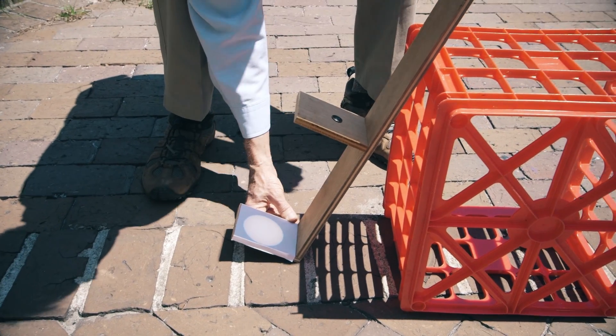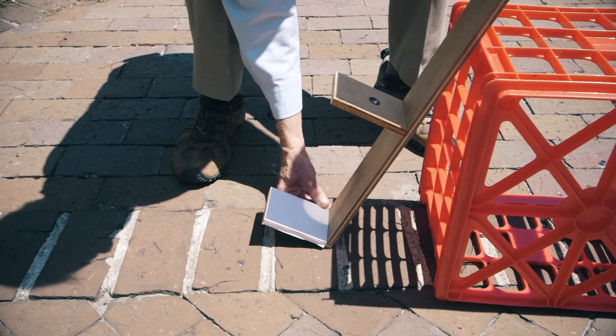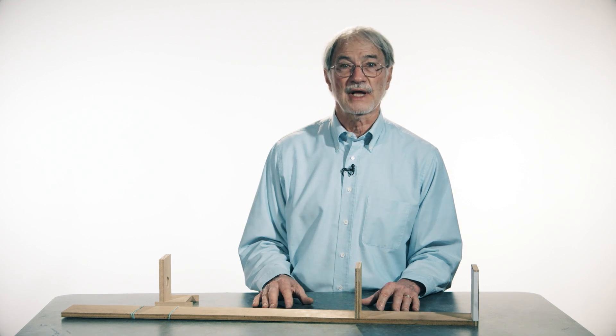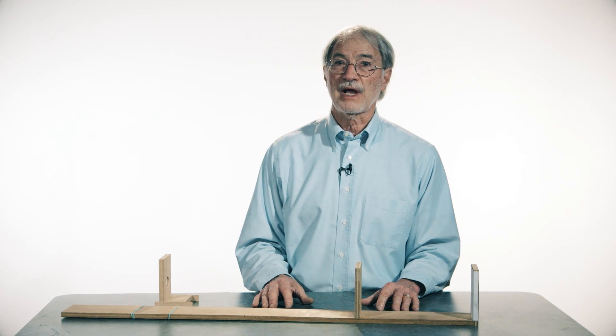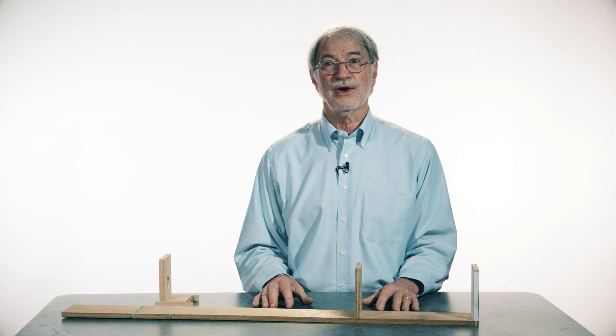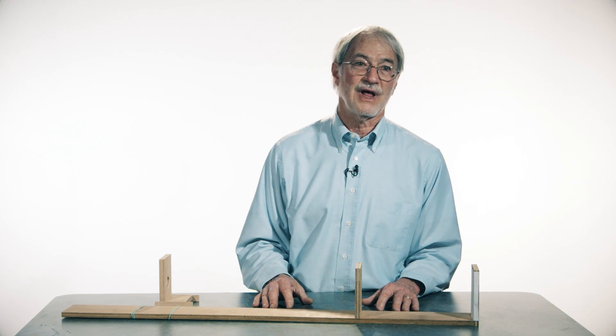So our solar projection device here is for observing the Sun and it's especially important this year with an eclipse of the Sun coming this August 21st. It's going to run from coast to coast starting in Oregon and ending in South Carolina.